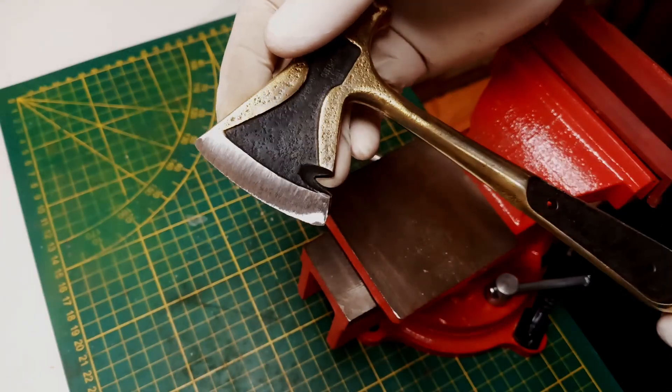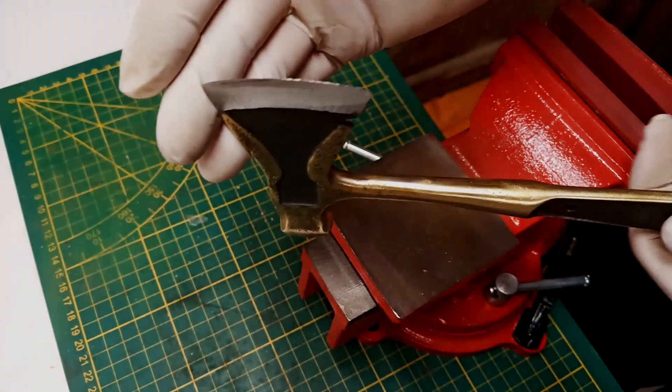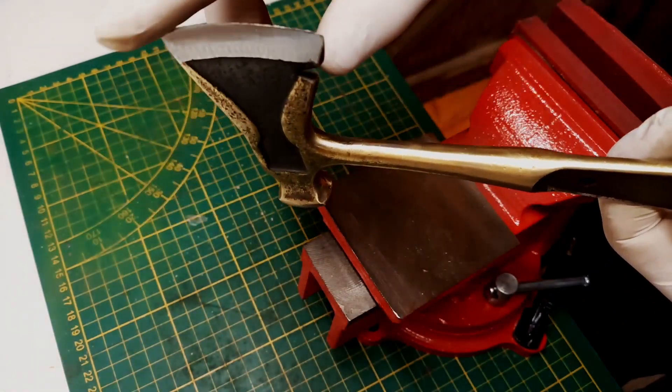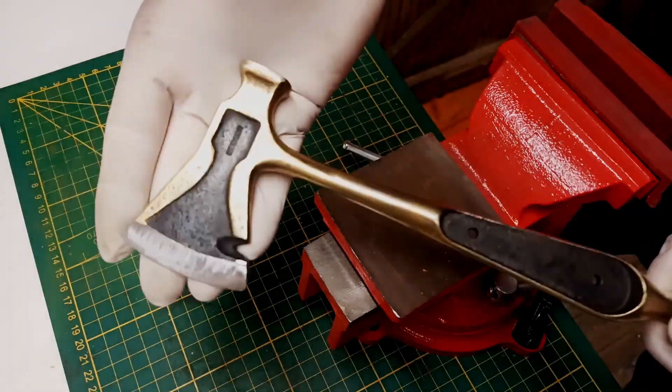Alright, as you guys can see, this step took care of all the deep spots and all the pitting, which now leaves us with still a very dull edge. So our next step will be visiting the good old belt sander and giving this axe back an apex.